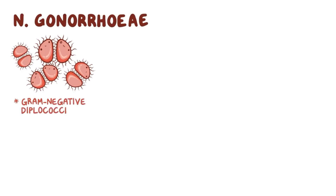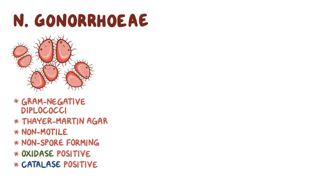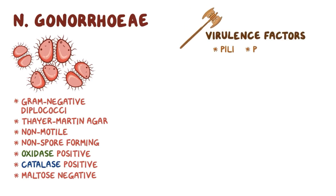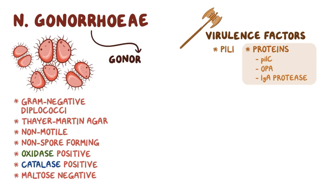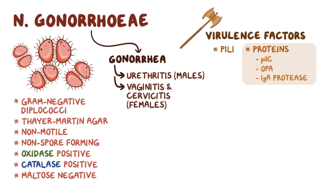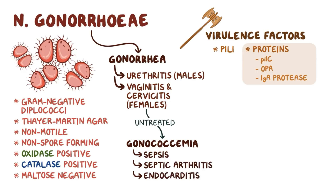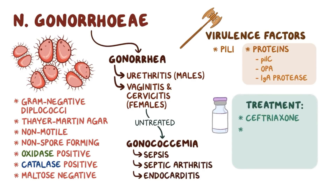As a quick recap, Neisseria gonorrhoeae is a gram-negative diplococci that grows best on Thayer-Martin Agar. It's non-motile, non-spore forming, oxidase positive, catalase positive, and maltose negative. It lacks a capsule, but has other virulence factors like pili and proteins like Pil-C, OPA, and IgA protease. Most frequently, N. gonorrhoeae causes gonorrhea, which commonly manifests as urethritis in males and vaginitis and cervicitis in females. Left untreated, N. gonorrhoeae infections can progress to gonococcemia and cause complications like gonococcal sepsis, septic arthritis, and endocarditis. Treatment is with ceftriaxone, and azithromycin or doxycycline are also given to cover a possible chlamydia co-infection.